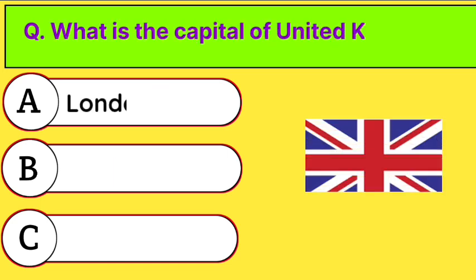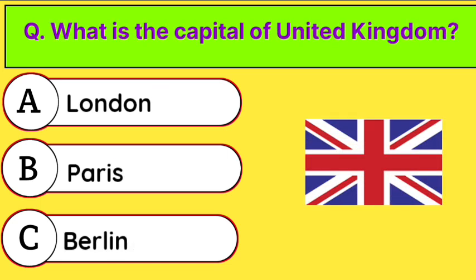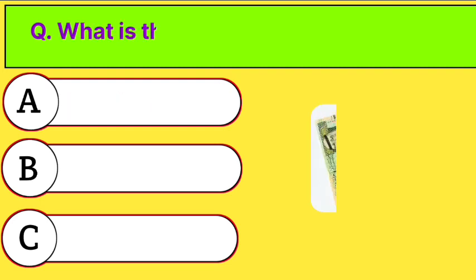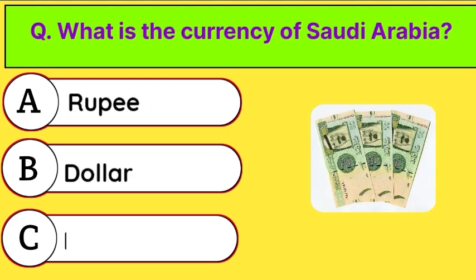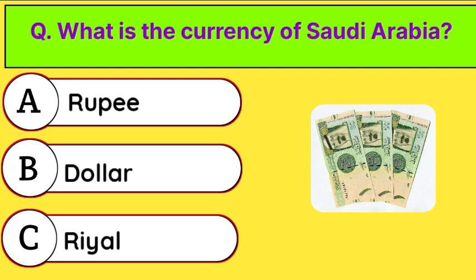What is the capital of United Kingdom? Correct answer is option A. London. What is the currency of Saudi Arabia? Correct answer is option C. Rial.